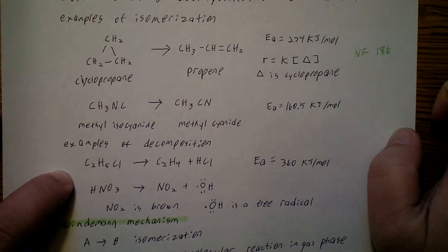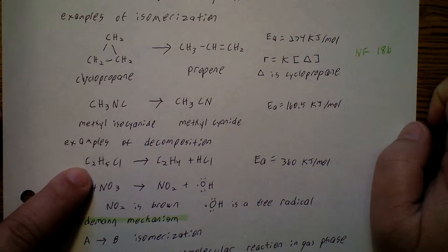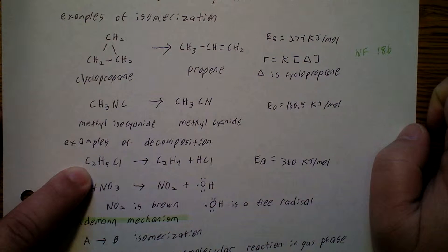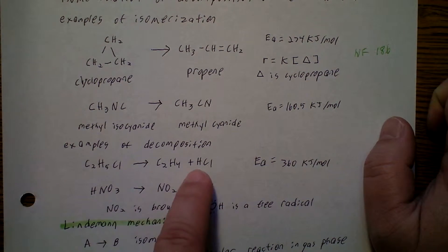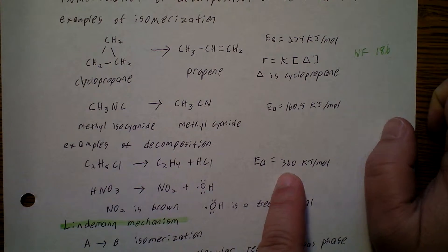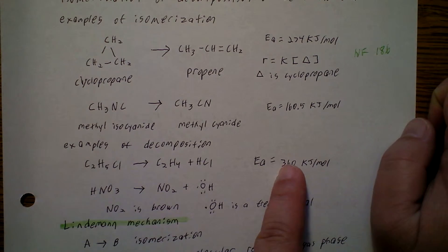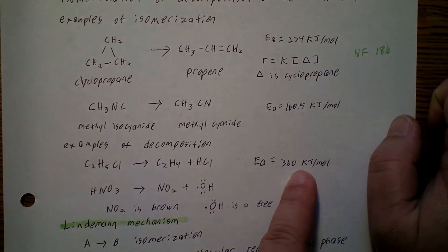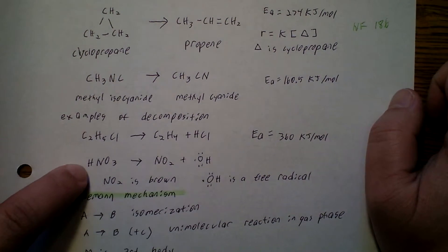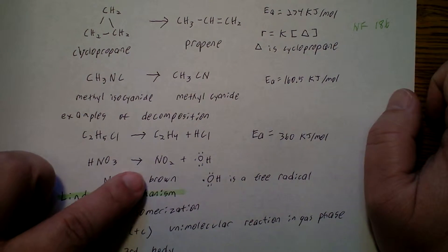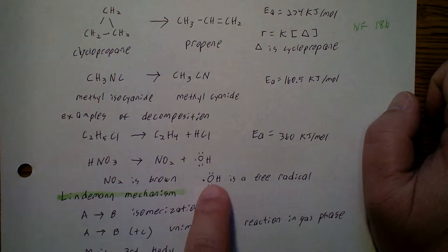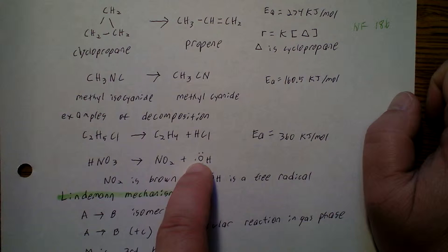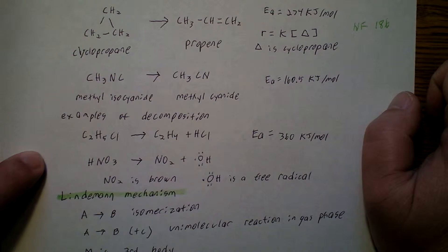Now an example of decomposition: we have CH2H3Cl, so that is chloroethane, going to CH2H4 — so that's ethene — and then HCl, hydrogen chloride. The energy of activation is not zero, it's 360 kilojoules per mole. And then we have HNO3 going to NO2 and OH. This NO2 substance is brown, and this OH here, remember this free electron with an odd number of electrons, is called a free radical.